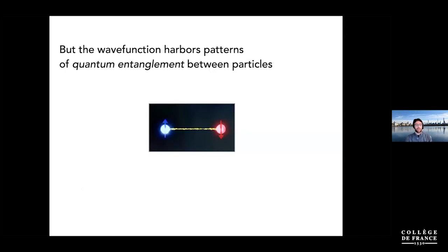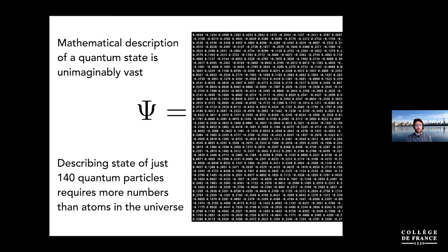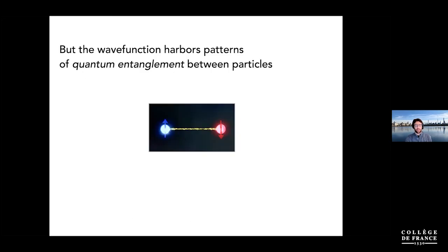It turns out — and this has long been known, but wasn't always appreciated as something that could be harnessed numerically — that there's quantum entanglement between particles, and that this quantum entanglement is something like a limited resource. It cannot be that every possible number means something totally different, but it wasn't obvious how to turn this idea into something useful for calculations.